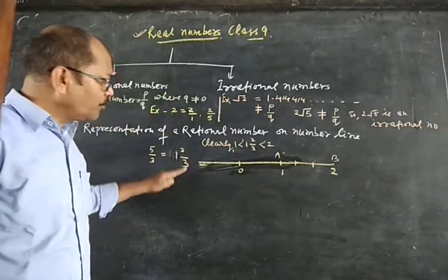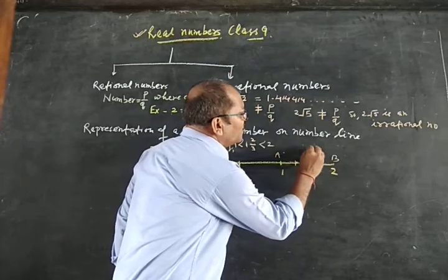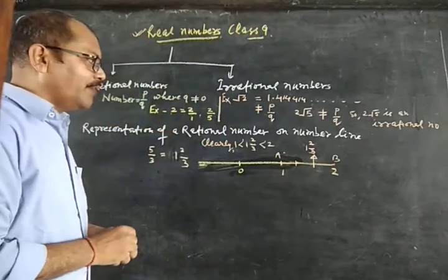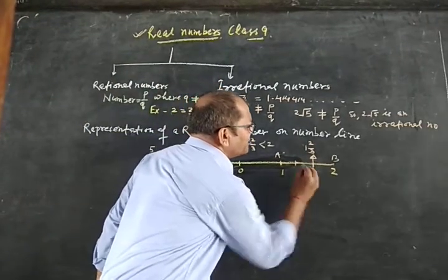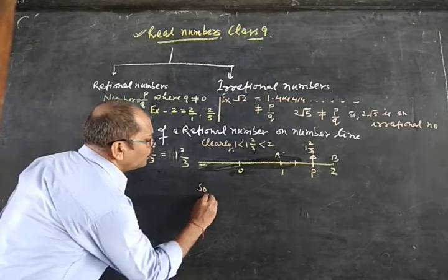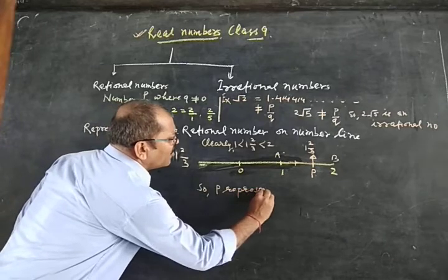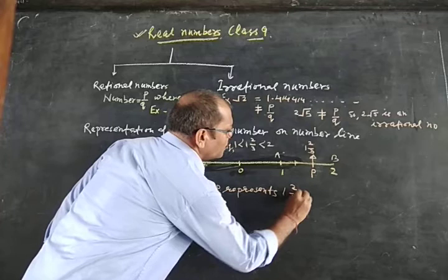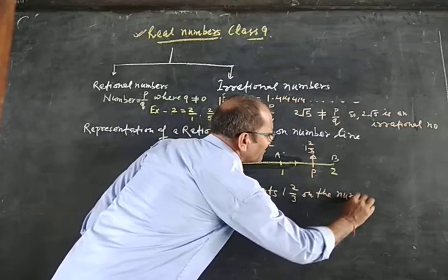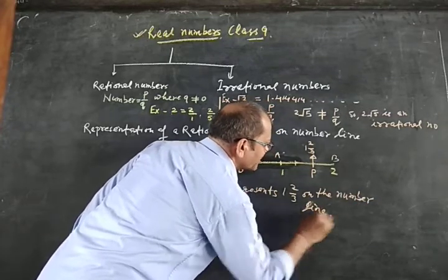So that is 1 and 2/3 on the number line. You will mention this way — mark the point and label it P. So P represents 1 and 2/3, which equals 5/3, on the number line.